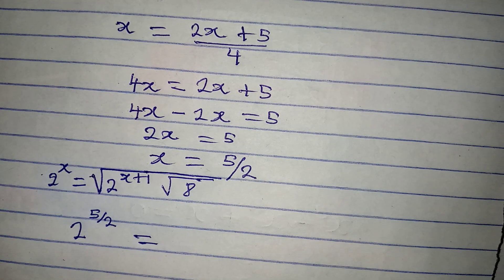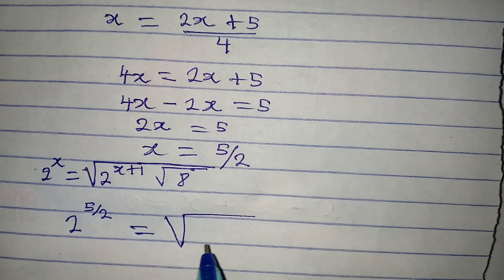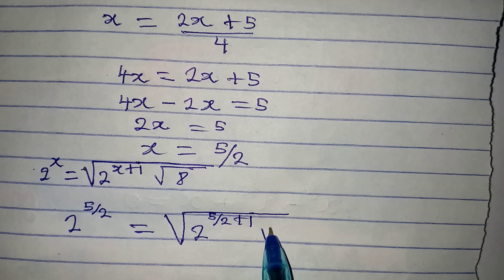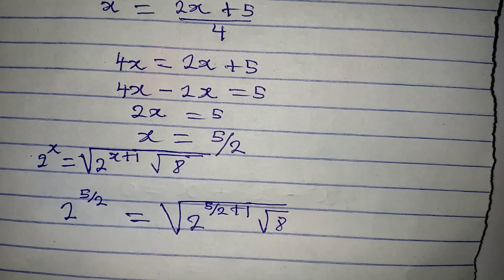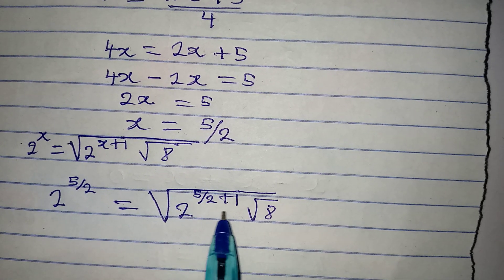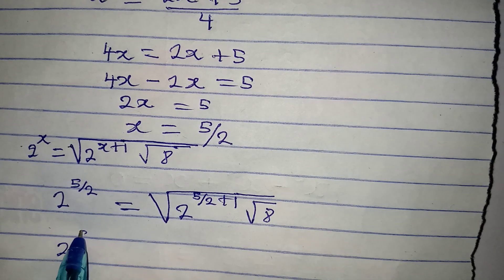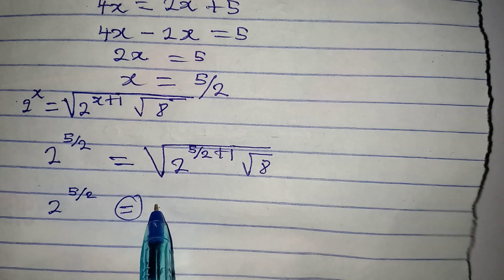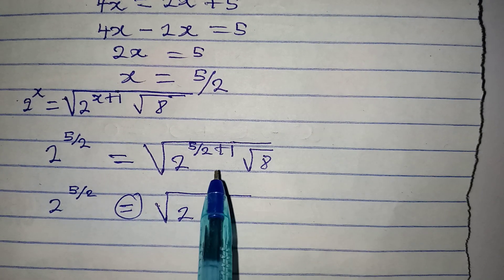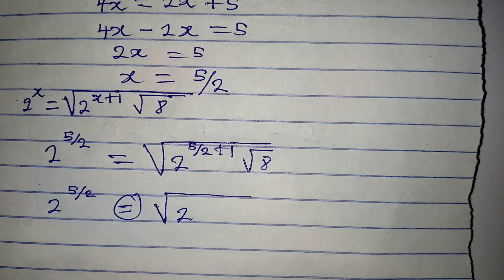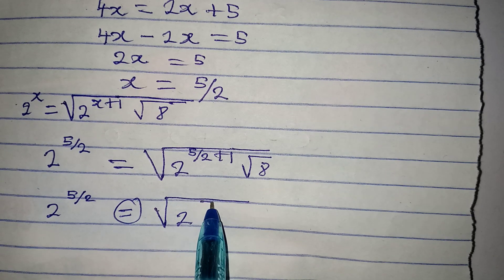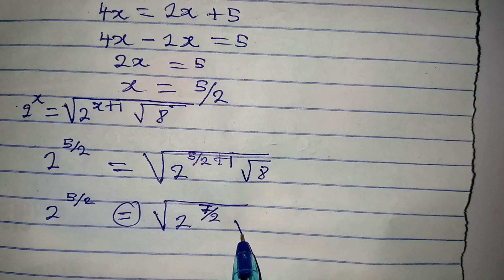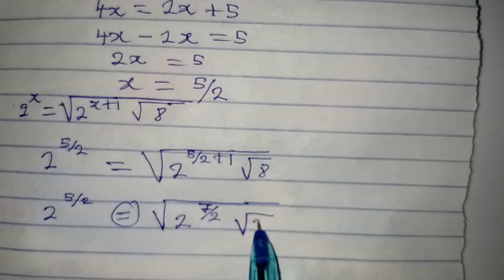On the right-hand side we have the square root of 2 to the power of x, which is now 5/2 plus 1, times the square root of 8. Let's deal with the terms in the bracket first. Adding 5/2 plus 1 gives us 7/2. And 8 is the same as 2 to the power of 3.